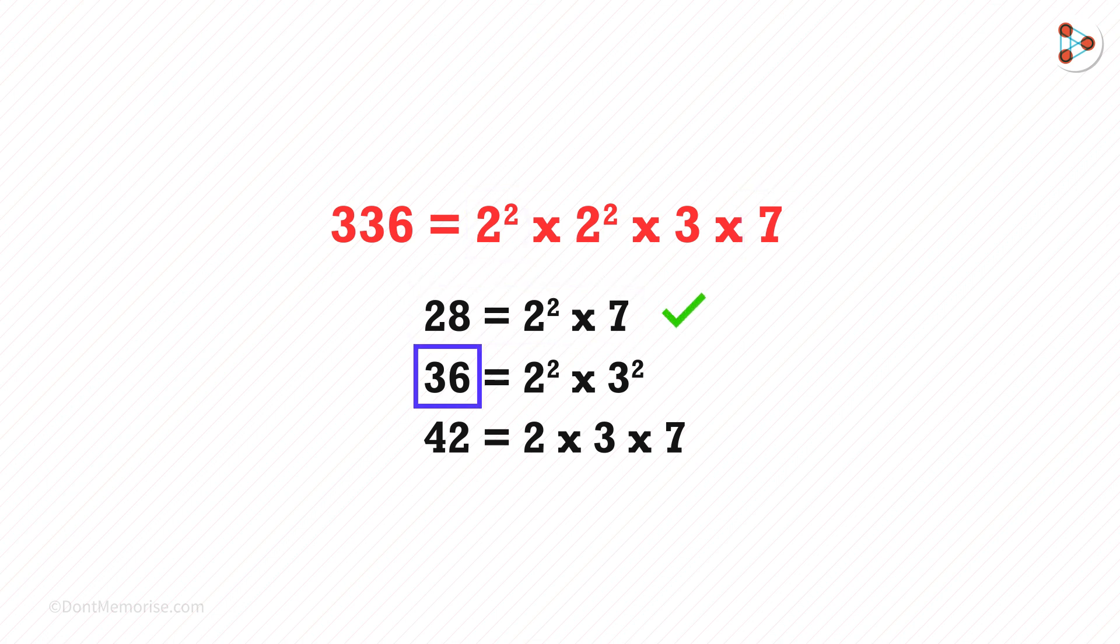So if you observe 36, you have 2 squared as well as 3 squared. Is 3 squared there in 336? No, there is only one 3. Hence, 36 is not a factor of 336.